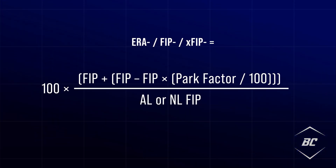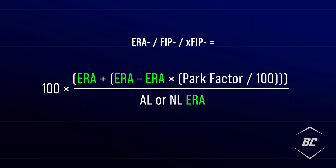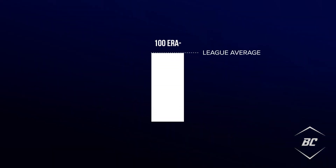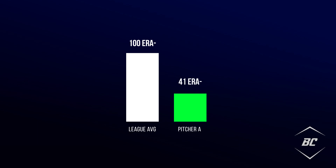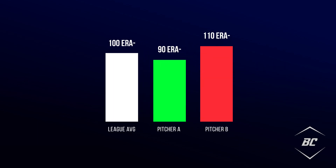ERA minus, FIP minus, and XFIP minus are represented by the same formula regardless of which metric you calculate — the only difference is you swap out the FIP, XFIP, or ERA. In practice, the league average is scaled to 100, and every point from 100 represents one percentage point better or worse than the league average. This means that a pitcher with a 90 ERA minus is 10% better than the league average, while a pitcher with a 110 ERA minus is 10% below the league average.